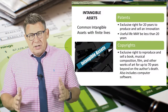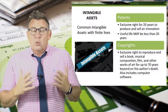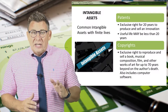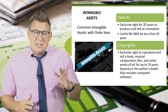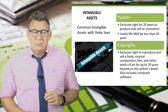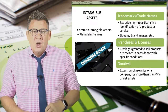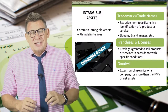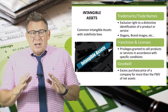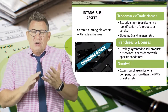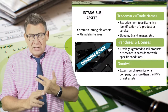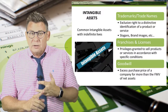Copyrights are similar protections, but they cover works of art and software. The legal protection is the author's life plus 70 years. Three common types of intangible assets with indefinite lives are trademarks and trade names, franchises and licenses, and goodwill.